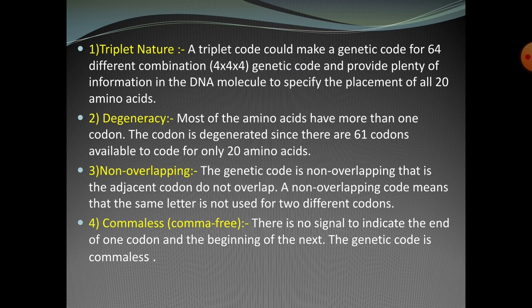The second characteristic is degeneracy. Most amino acids have more than one codon. This code is degenerate since there are 61 codons available to code for 20 amino acids. For example, serine has six codons while glycine has four codons — this is the degeneracy of the genetic code.